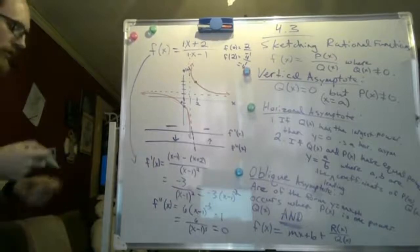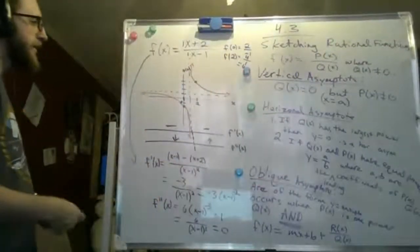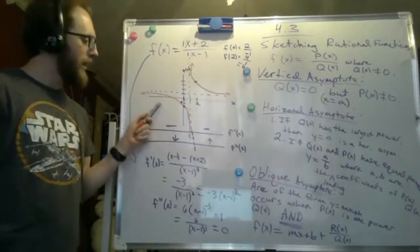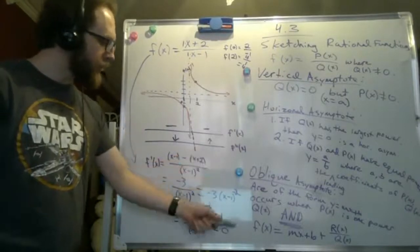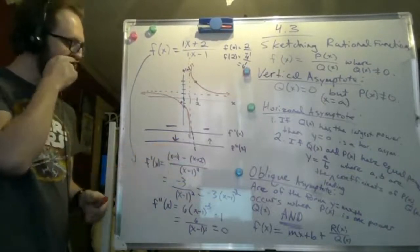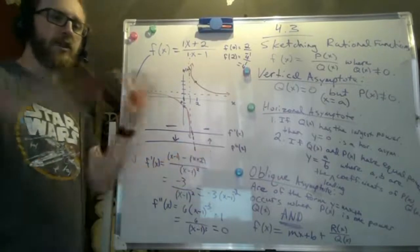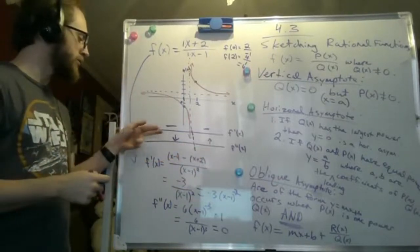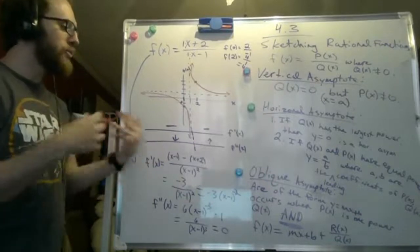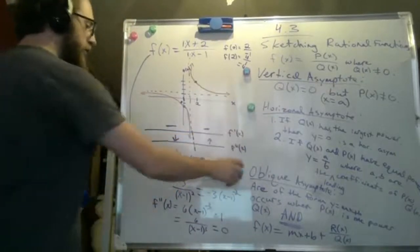That is how you apply what we did in the previous section to rational functions. The only difference is that you calculate asymptotes first and label them on your graph so you don't accidentally cross them. Then you follow the exact same steps: find critical points, find hypercritical points, label intervals for increasing and decreasing, label intervals for concavity, and then draw the appropriate lines based on those labels.